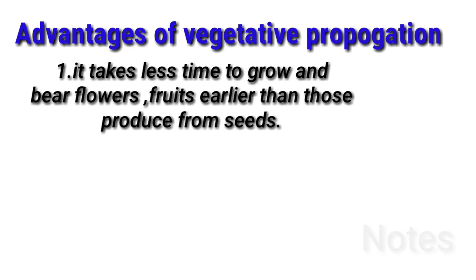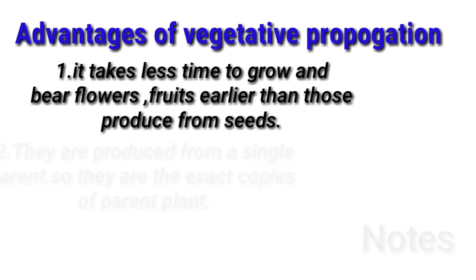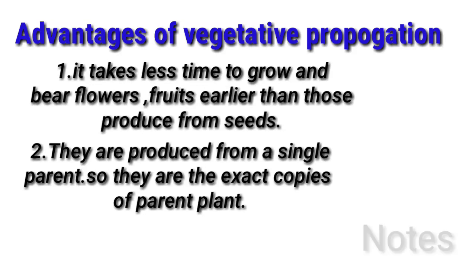So, we learned about vegetative propagation. This is asexual reproduction — a single parent will produce an exact copy of the new plant.